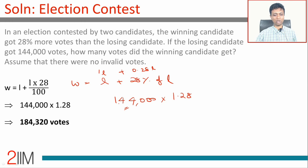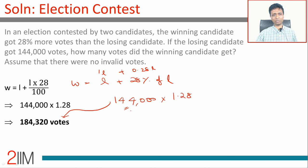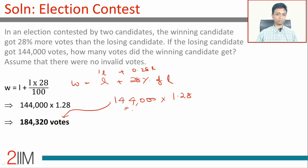This is 1·L plus 0.28·L, so the winning candidate gets 1.28 times L. The losing candidate gets 144,000, so the winning candidate gets 144,000 × 1.28. Computing that gives 184,320. This is very simple — I'm not going to dwell on the computation. All we are saying is L plus 0.28L equals W.